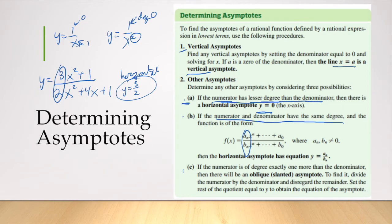The last one involves us dividing polynomials. If the numerator is of degree exactly one more than the denominator, then there will be an oblique or slanted asymptote. To find it, you divide the numerator by the denominator and disregard the remainder.